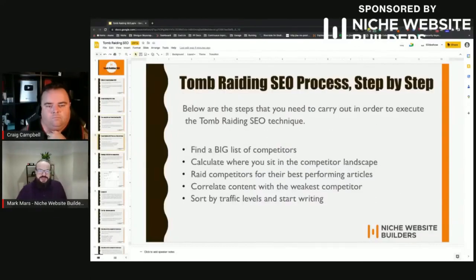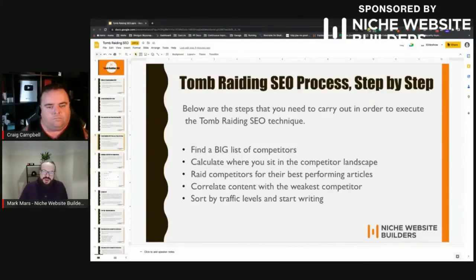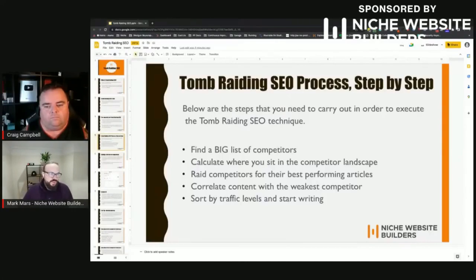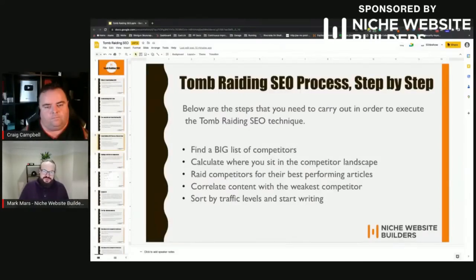Here are the steps we go through. We find a big list of competitors. We calculate where we sit in the competitor landscape — are these competitors a stronger or weaker authority site than us? We then look at those weaker competitors and raid them for their best performing articles. We correlate the content against the weakest competitors, then sort by traffic levels of the articles and start writing, going for the articles with the most opportunity first.